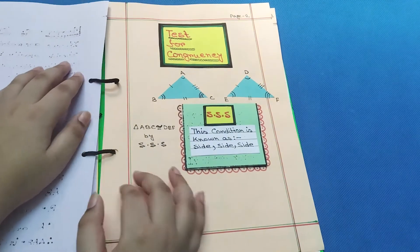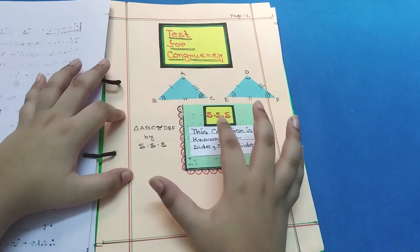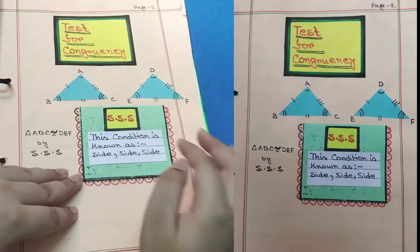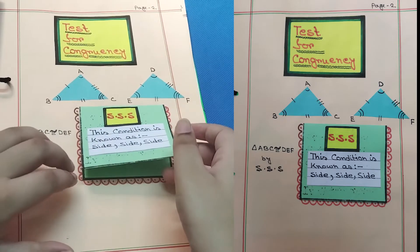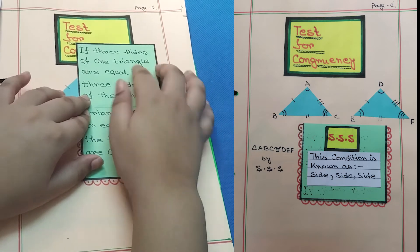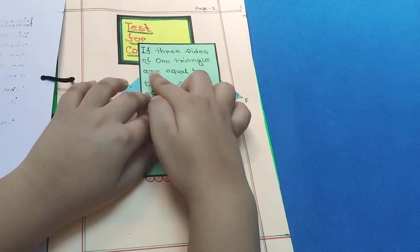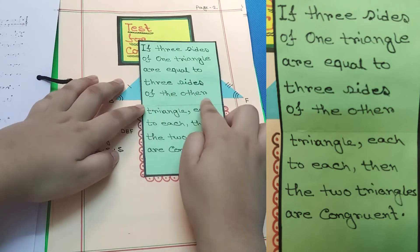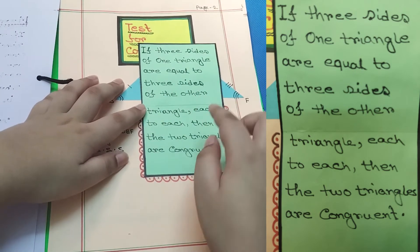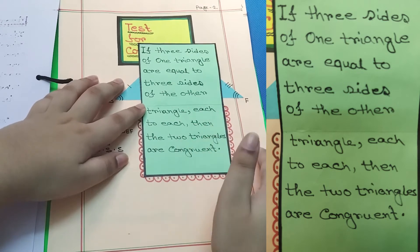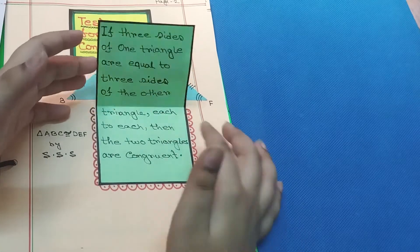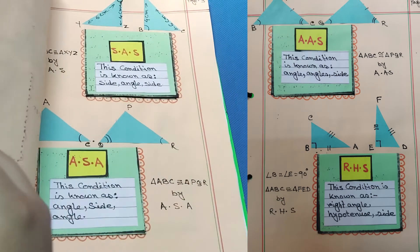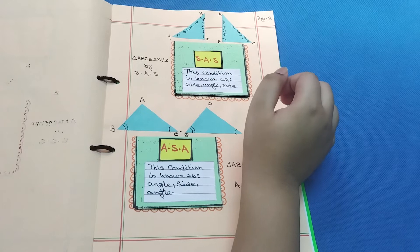Let's change the page. This is the test for congruency: SSS. This condition is known as Side-Side-Side. Let's fold this out. If three sides of one triangle are equal to three sides of the other triangle, each to each, then the two triangles are congruent.